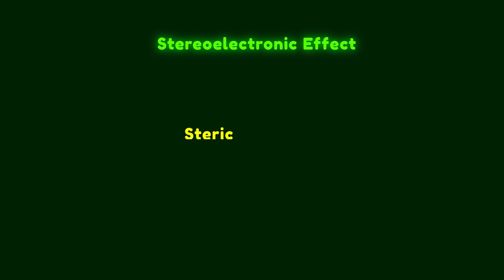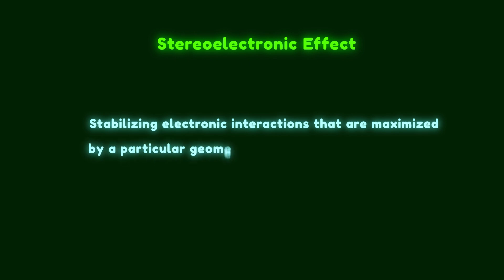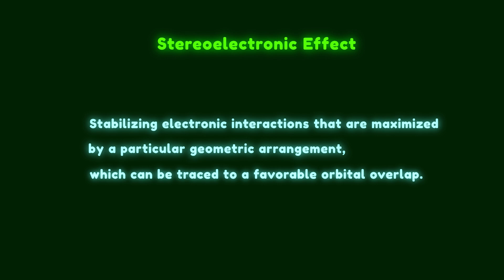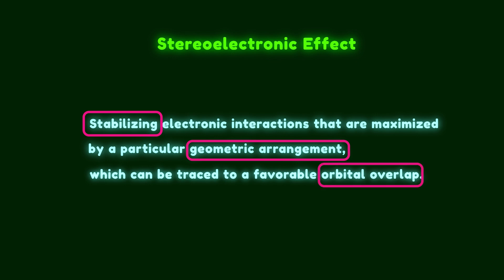You might think it's a combination of steric plus electronic effects, but that's not the case. We can define the stereoelectronic effect as stabilizing electronic interactions that are maximized by a particular geometric arrangement, which can be traced to a favorable orbital overlap. There are three keywords in this sentence. The first is stabilizing — stereoelectronic effects are always stabilizing interactions. The second is geometric arrangement, and the last is orbital overlap, meaning this stabilizing effect comes from orbital interactions.